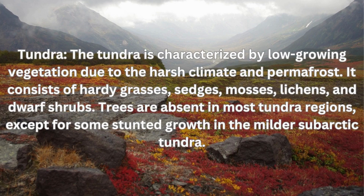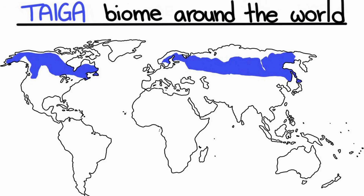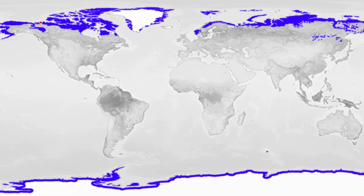Trees are largely absent in most tundra regions, except for some stunted growth in the milder subarctic tundra. Geography: The taiga is found in the northern parts of North America, Europe, and Asia, spanning vast areas of Canada, Russia, Scandinavia, and parts of Alaska. The tundra is found in the high latitudes of the Arctic region, primarily in Alaska, northern Canada, Greenland, Scandinavia, and northern Russia.